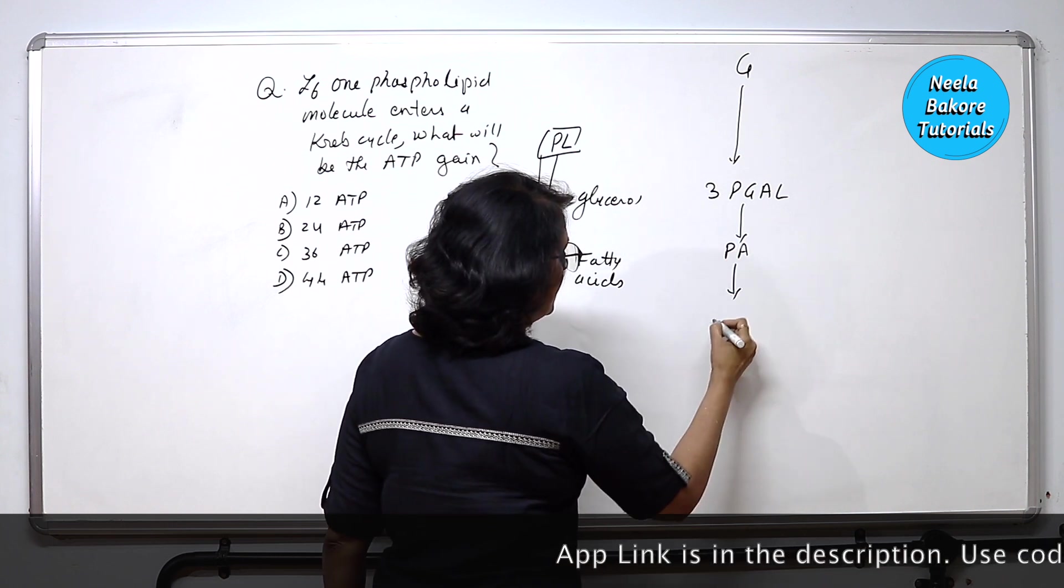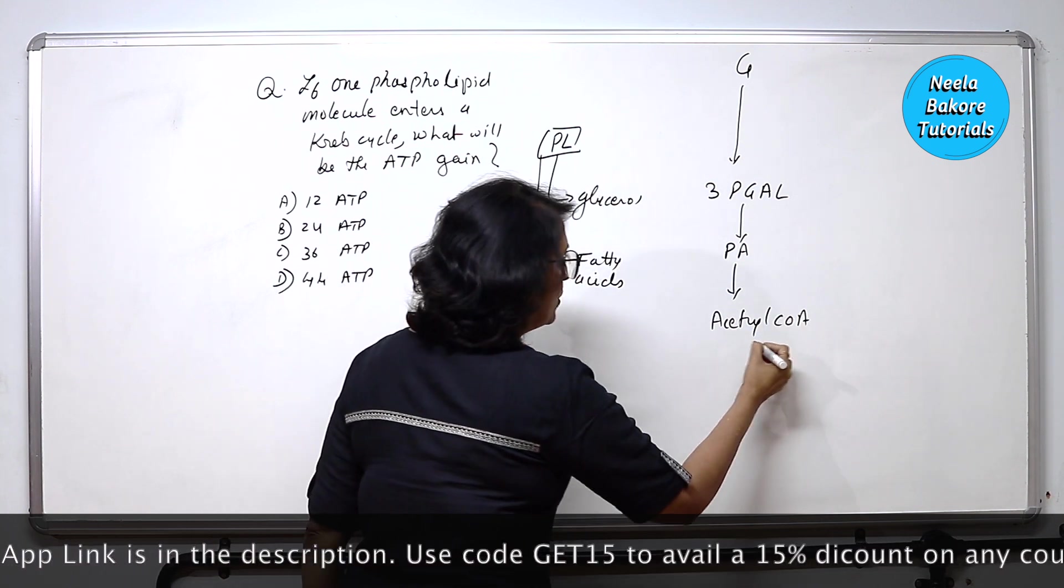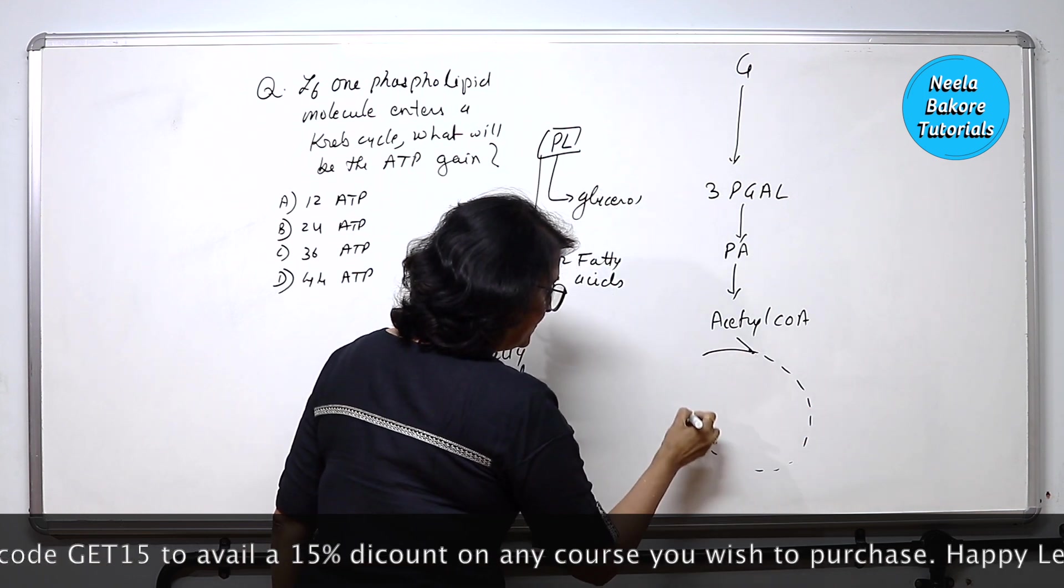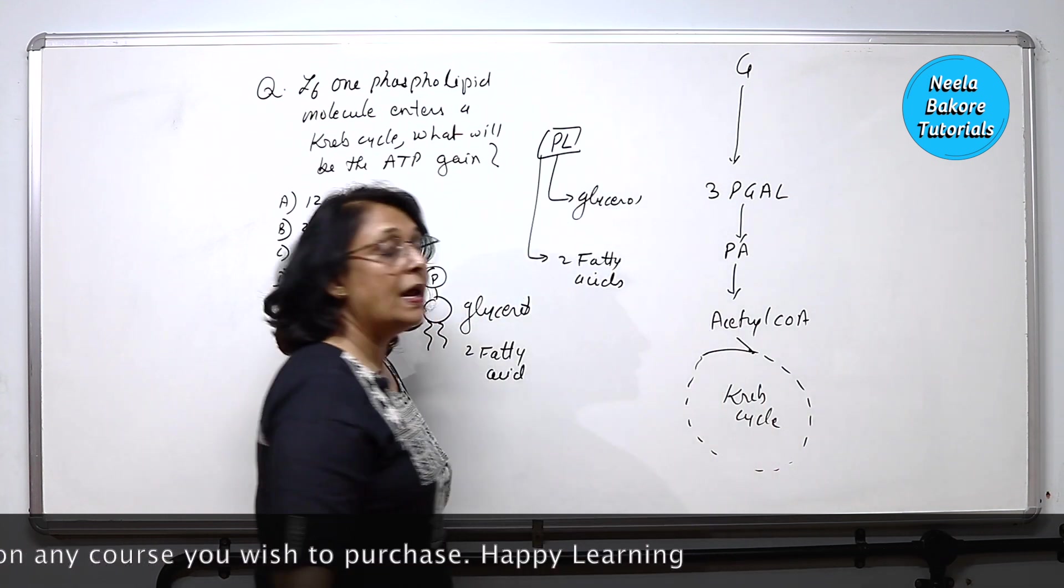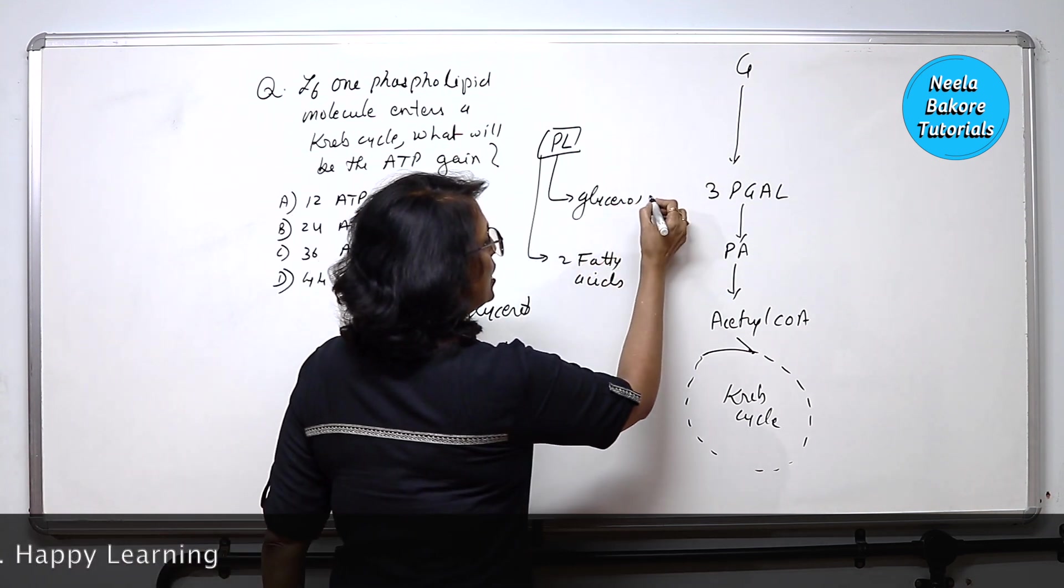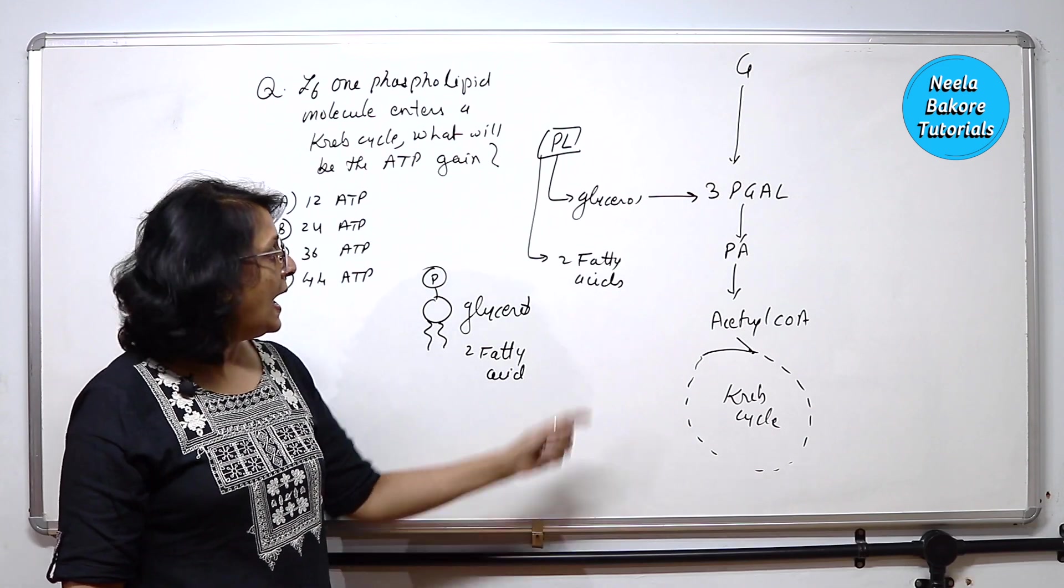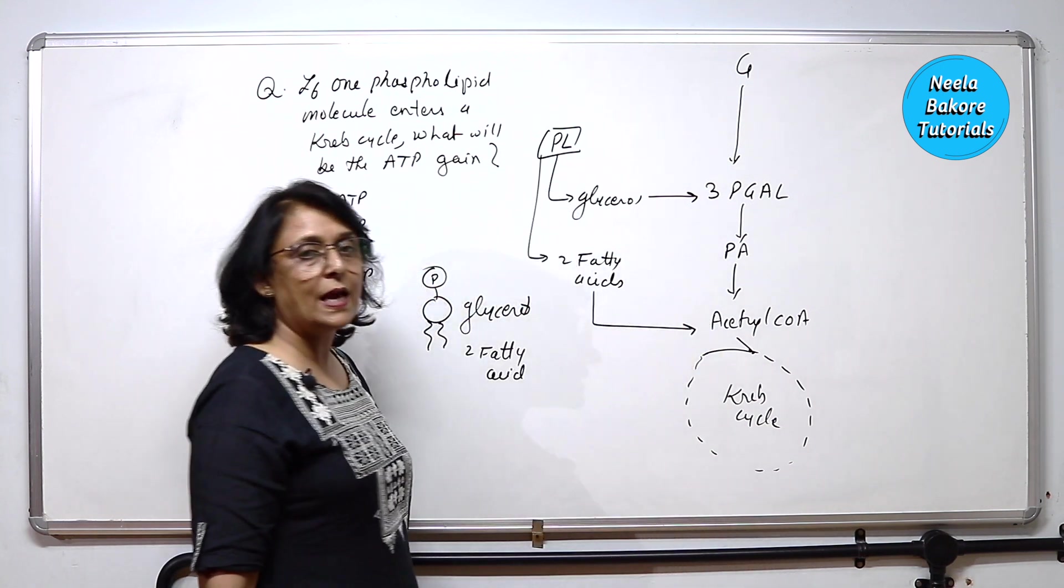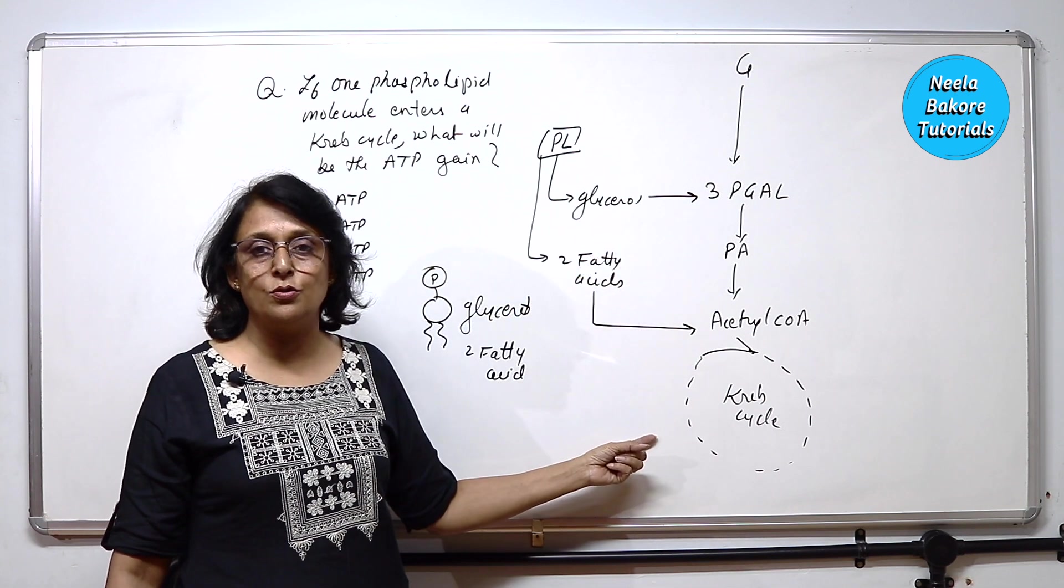Pyruvic acid changes into acetyl coenzyme A, and acetyl coenzyme A then participates in this Krebs cycle. So this is our Krebs cycle. Now this glycerol which is formed, it actually changes into 3-PGAL. And the two fatty acids which are formed, they change into the acetyl coenzyme A. That means when it enters this pathway, it is going to join here and it is going to join here.